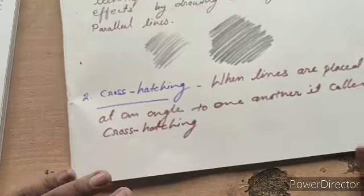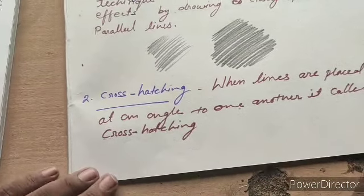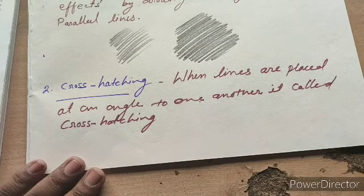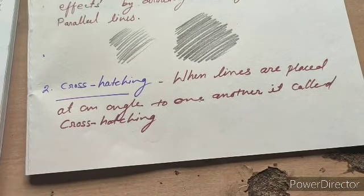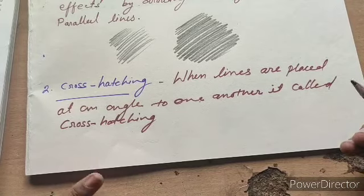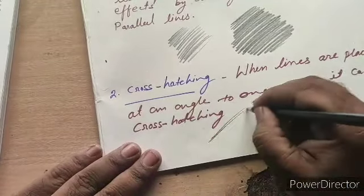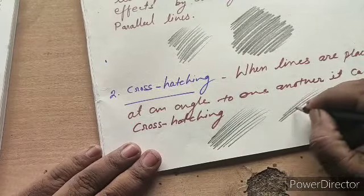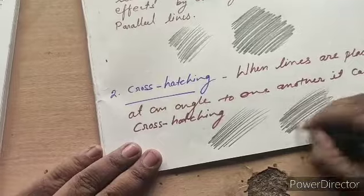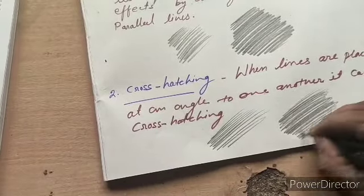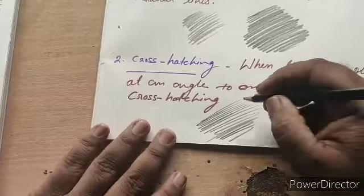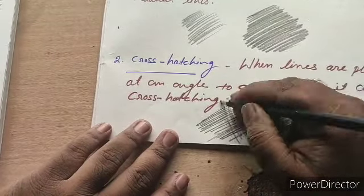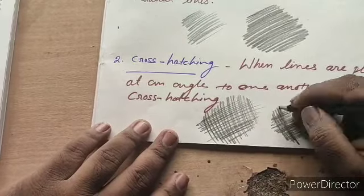The second technique is cross-hatching. When lines are placed at an angle to one another, it is called cross-hatching. Cross-hatching is a shading technique where you draw lines on the other side, overlapping at another angle — that is called cross-hatching.